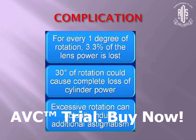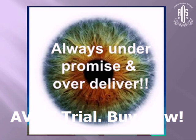The complications of toric IOL: for every one degree of rotation, there is a 3.3% loss of lens power, and for every 30 degrees of rotation, there can be complete loss of cylindrical power. Excessive rotation can actually induce additional astigmatism. So the main theme of these two lenses is always to under-promise and over-deliver. Thank you.